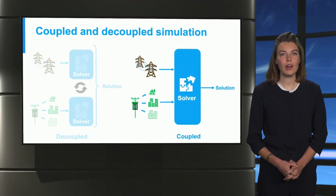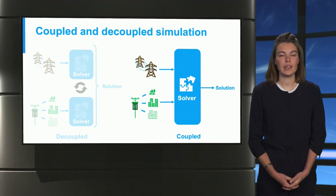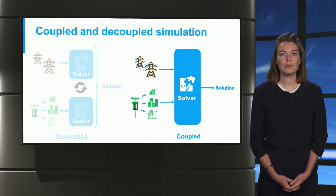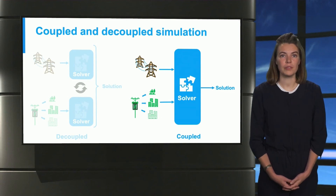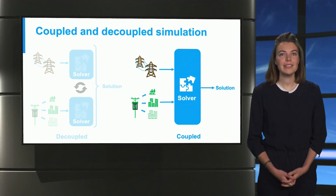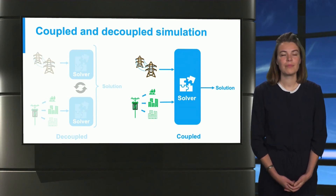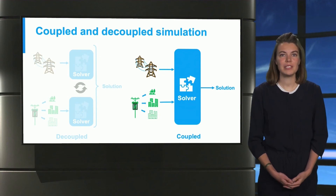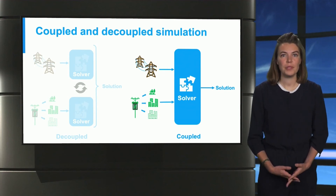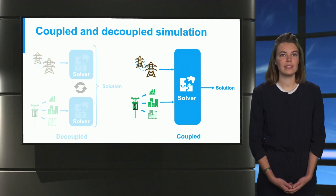The other option is the coupled solver, where simulations are done together. Here, both the transmission network and the distribution network are described by their own models. Those are combined in one big problem, and then we have one common solver that tackles the problem. Hopefully, the solution is the same as what is done in a decoupled solver, but the paths taken are different.